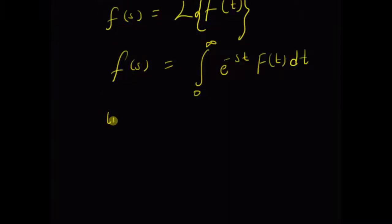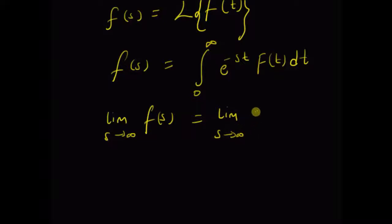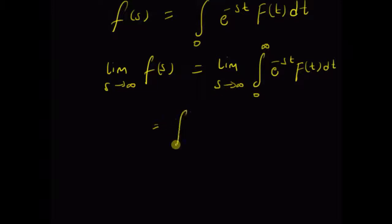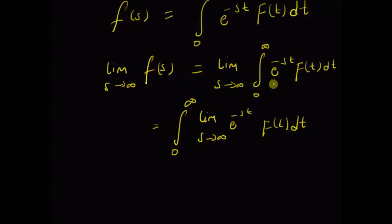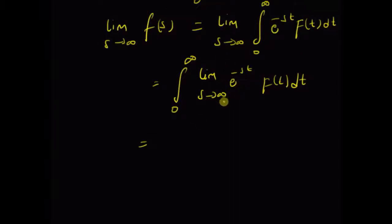Now, by applying the limit as s tends to infinity, F(s) equals the limit as s tends to infinity of the integral from 0 to infinity of e^(−st) f(t) dt. By taking the limit inside the integral, we have the integral from 0 to infinity of the limit as s tends to infinity of e^(−st) f(t) dt. Since s is a different variable than t, we can apply the limit on e^(−st), which is the only function of s, and clearly e^(−st) as s tends to infinity is 0.